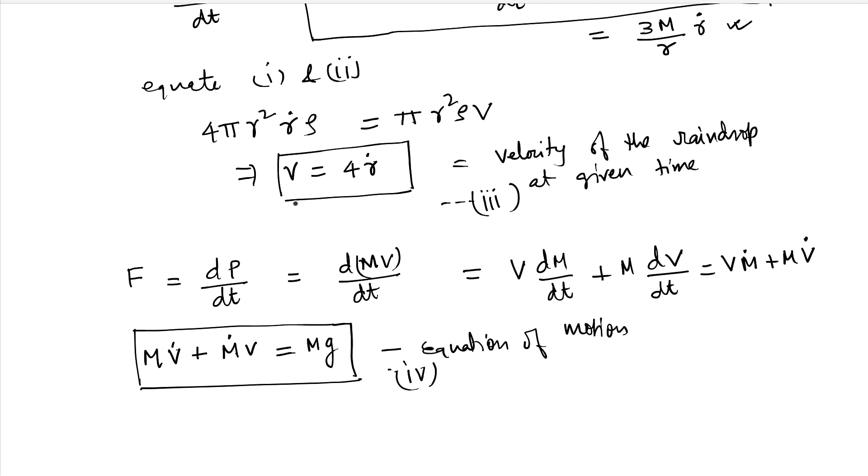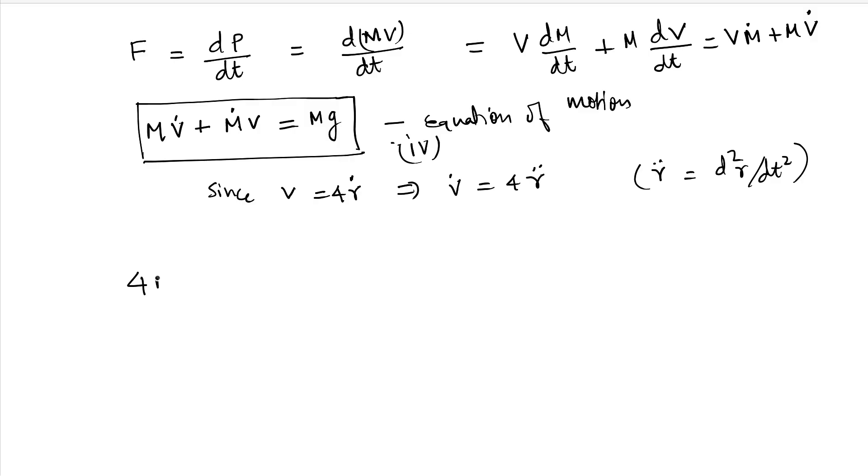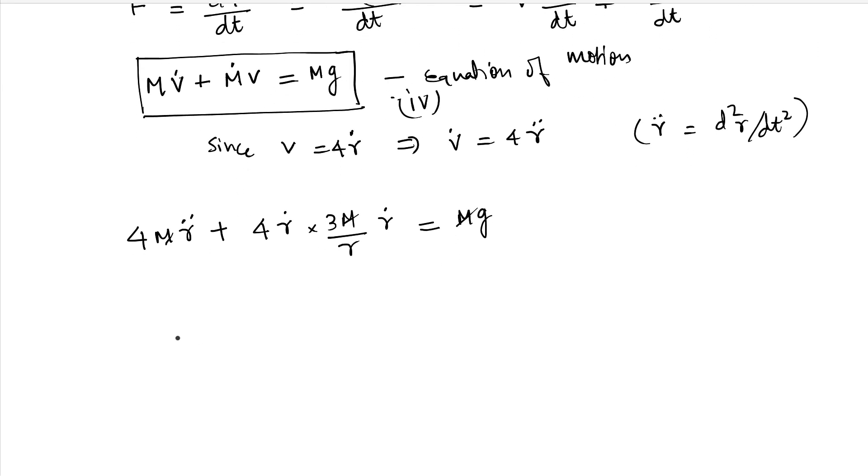And for V dot, we can simply use, since V is 4r dot, that implies V dot is 4r double dot. R double dot is nothing but d²r by dt square. So this becomes 4m r double dot plus V. What is V? V is 4r dot. And what is m dot? m dot is 3m by r r dot. So 3m by r r dot. And equal to mg. So m will cancel out everywhere. And therefore, what we have is 4r double dot r plus 12r dot square equal to gr.